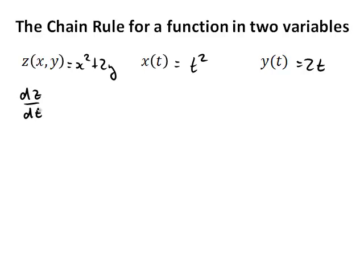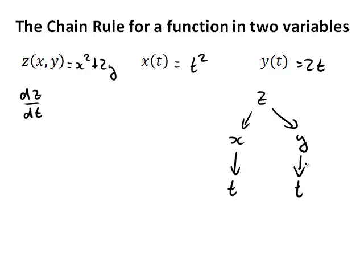Rather than remember the chain rule, I will just develop it whenever I come across a question like this. I will write z at the top and use a tree diagram to visualize this. I will write all independent variables of z — that's x and y — and draw arrows to them. Since x is in t, I write t below x, and since y is in t, I write t below y as well. To find dz/dt, I follow each of the two paths that lead to t. There are two paths, meaning whatever I get from the first branch I add to whatever I get from the second branch.